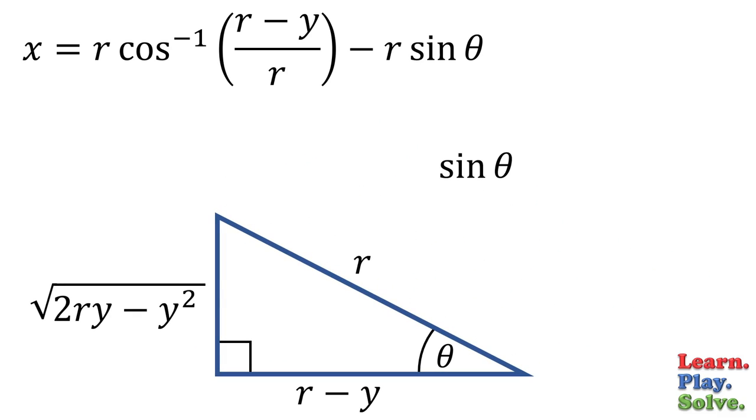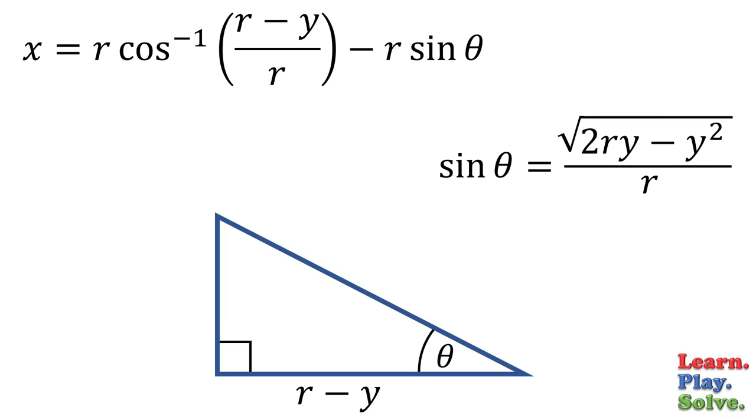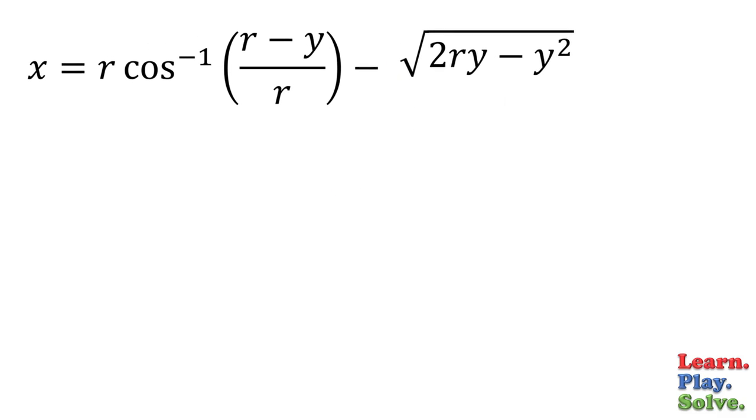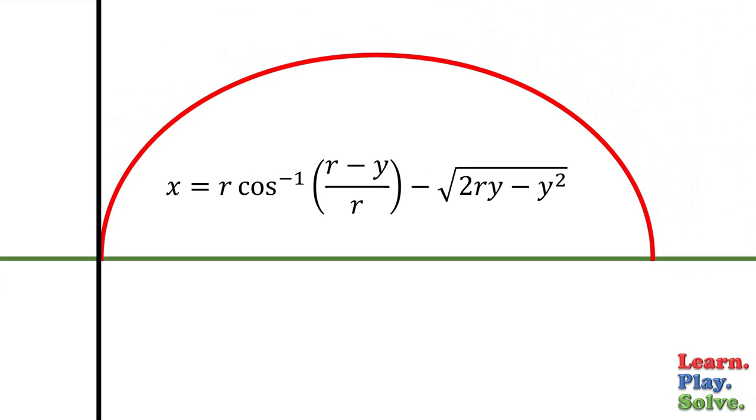So the sine of theta is opposite over hypotenuse. Now plug that in and cancel out the r's. And now we have the equation of a cycloid.